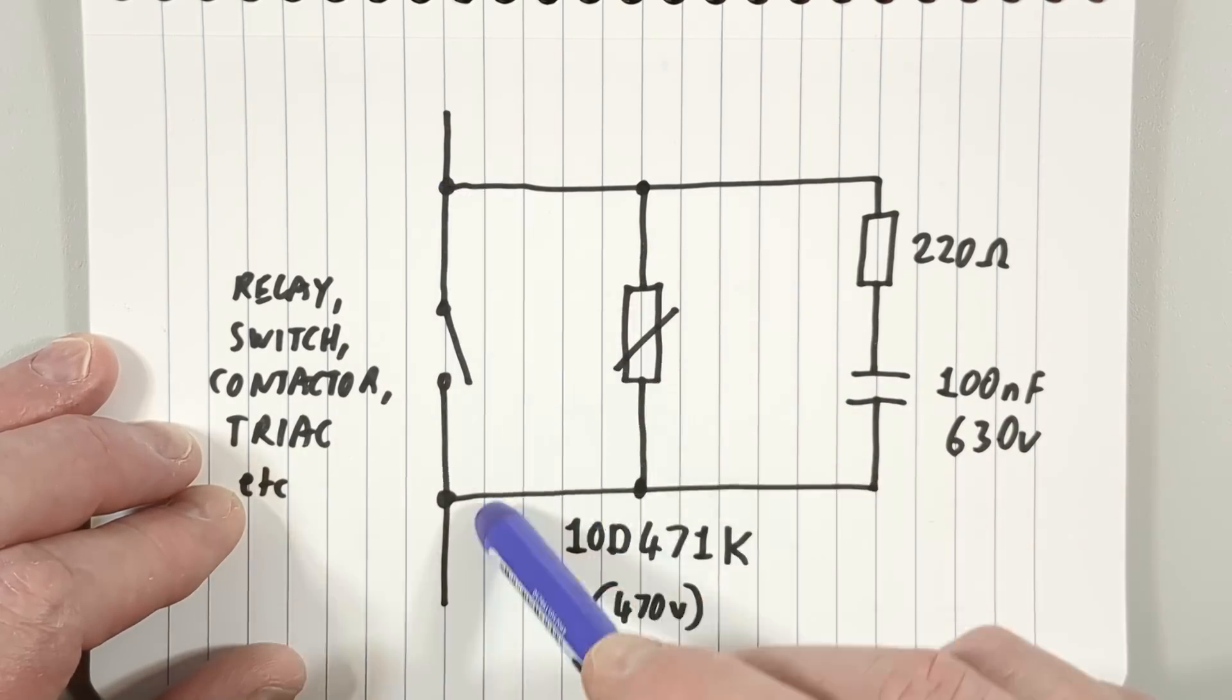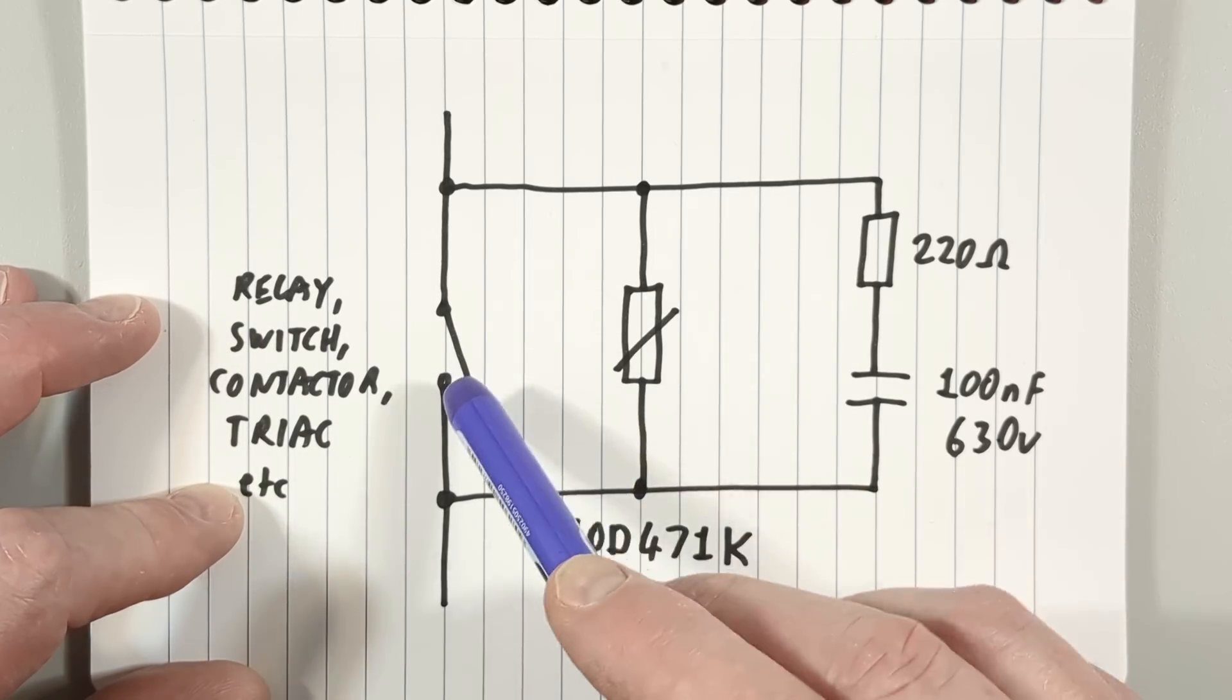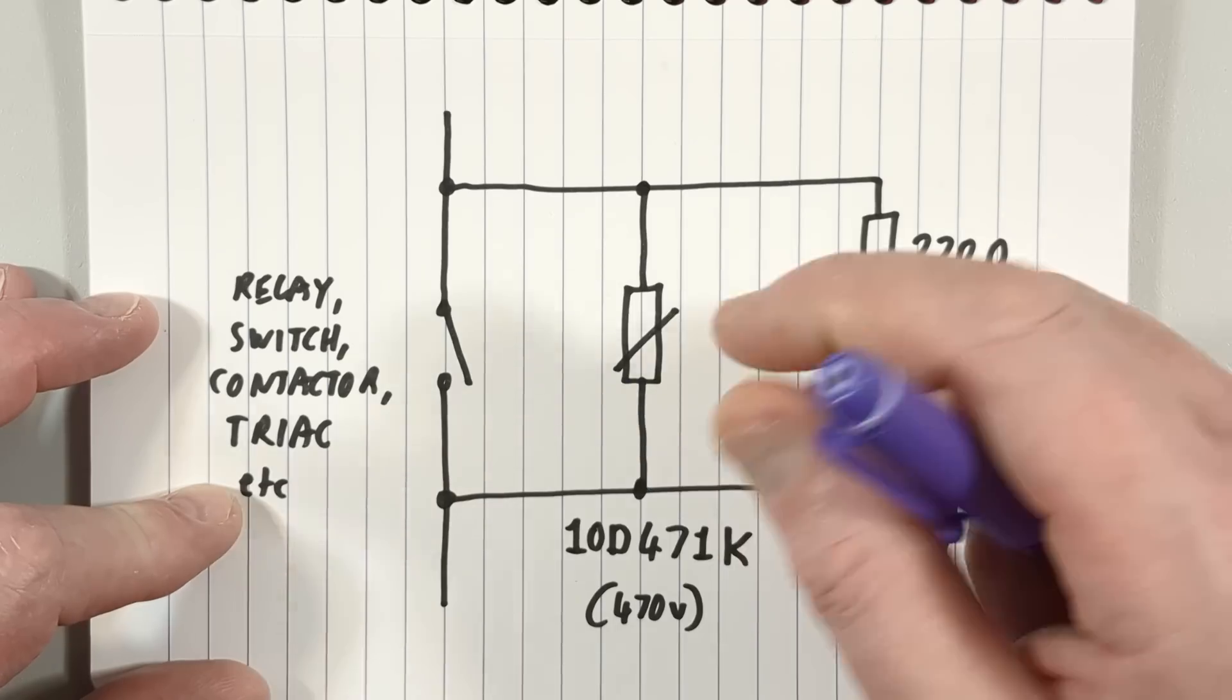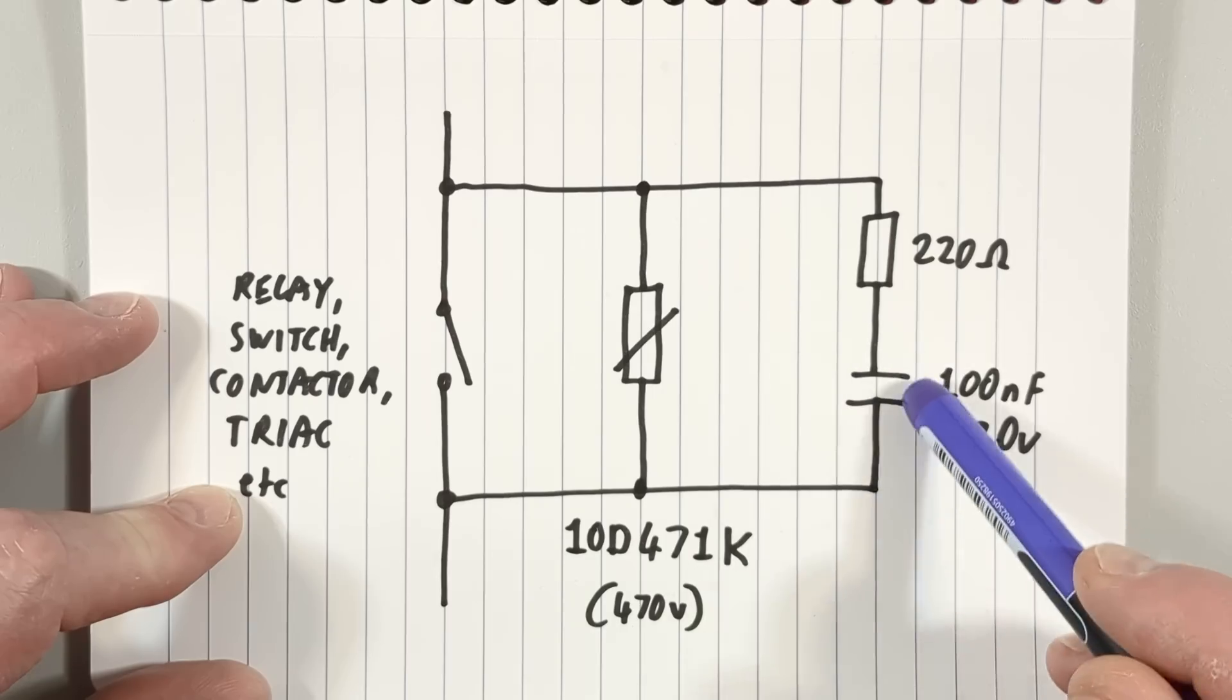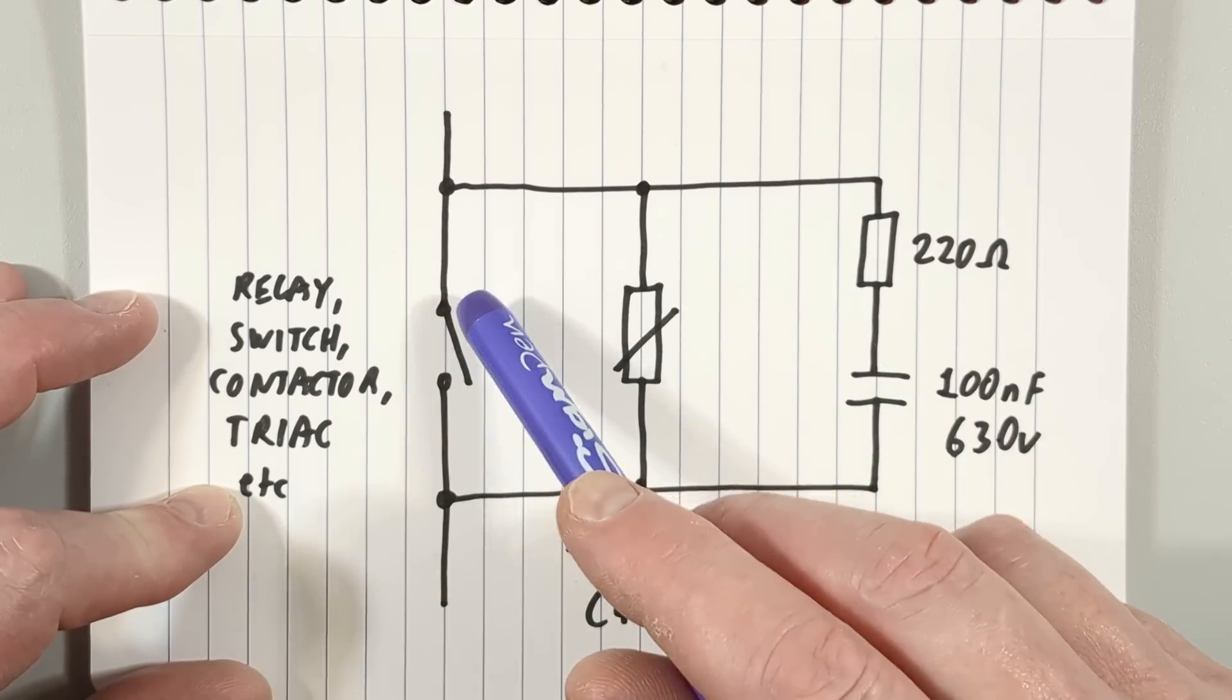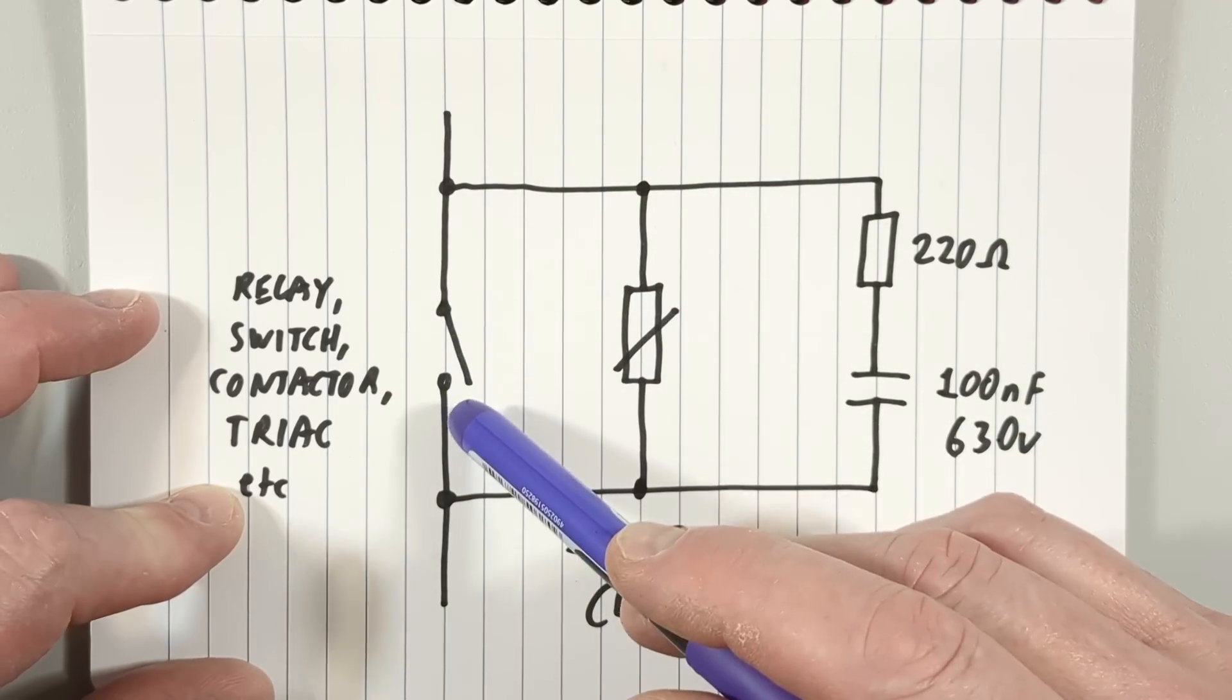When you put it across a contact and the contact opens, you can get a slight arc drawn. That arc causes high frequency electrical noise across either side of the switch. Because these capacitors are very good at passing electrical noise, the capacitor shunts that and actually controls the arcing, reducing the amount of arcing in the contact.